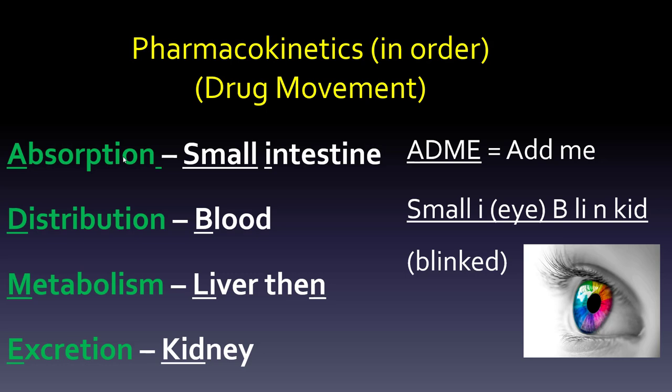We also need to know what each component goes with. Absorption goes with the small intestine — that's usually where it is, not the stomach, because there's a lot more surface area there. Distribution is the blood. Metabolism is the liver, and then excretion goes to the kidney. I use the mnemonic 'BLINKED': small i for small intestine, B for blood, LIN is in liver, and KID is the end of blinked — spelled B-L-I-N-K-E-D. So absorption, distribution, metabolism, excretion maps to small intestine, blood, liver, kidney.